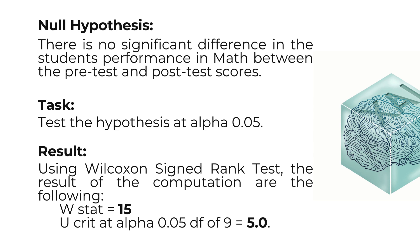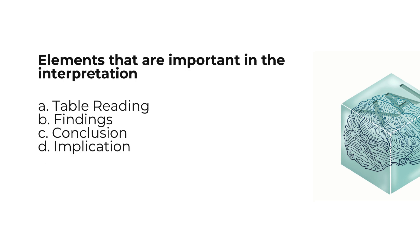Our null hypothesis is: there is no significant difference in the students' performance in math between the pre-test and the post-test scores. Our task was to test the hypothesis at alpha 0.05. After performing the Wilcoxon Signed-Rank test, the results are: our W-stat equals 15, and our W-critical at alpha 0.05 with degrees of freedom of 9 equals 5.0.